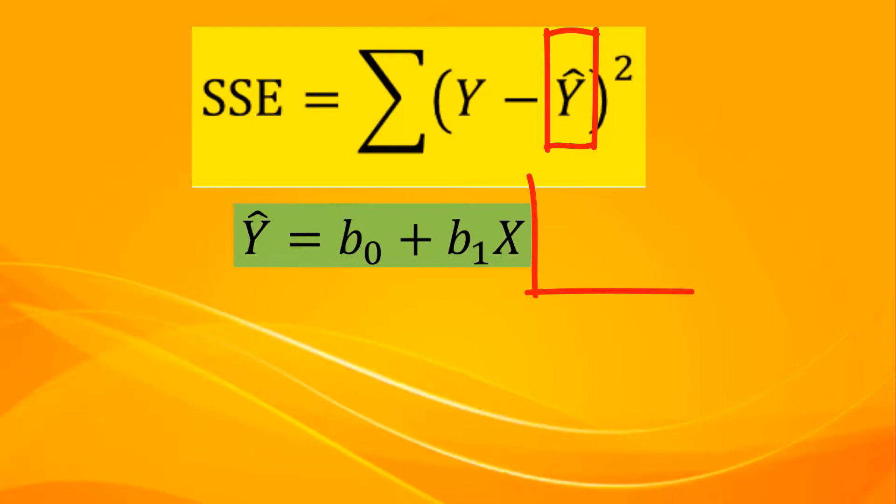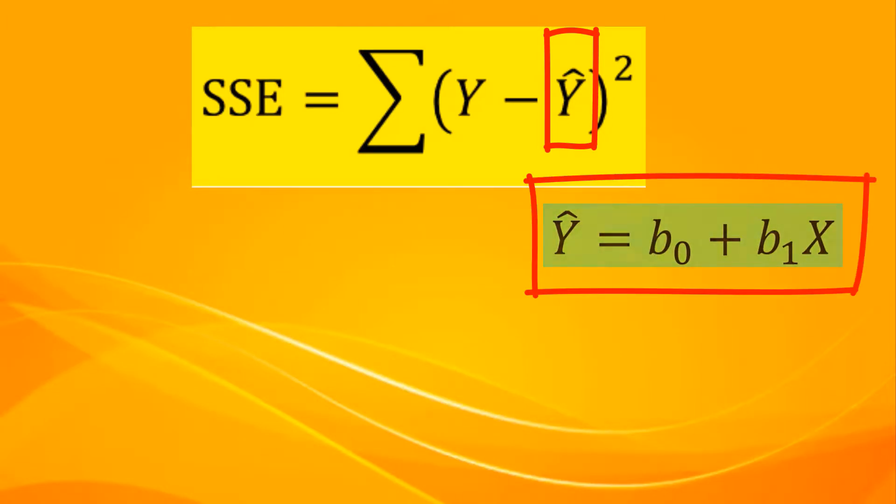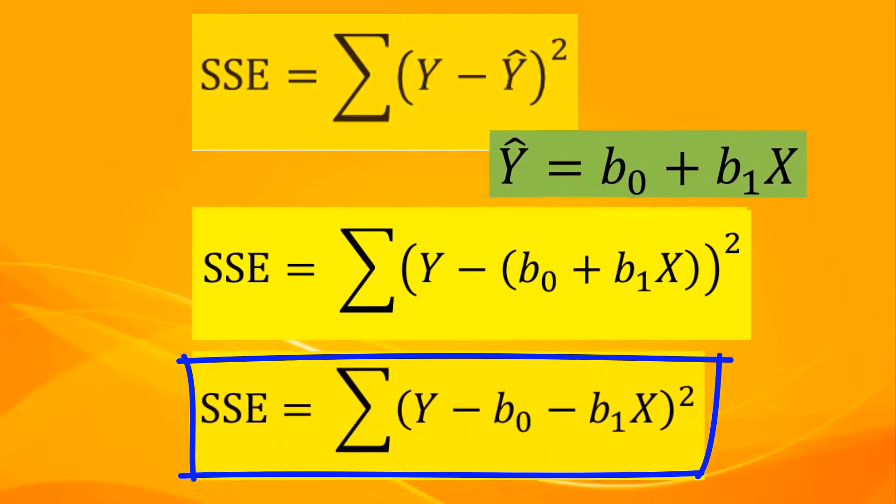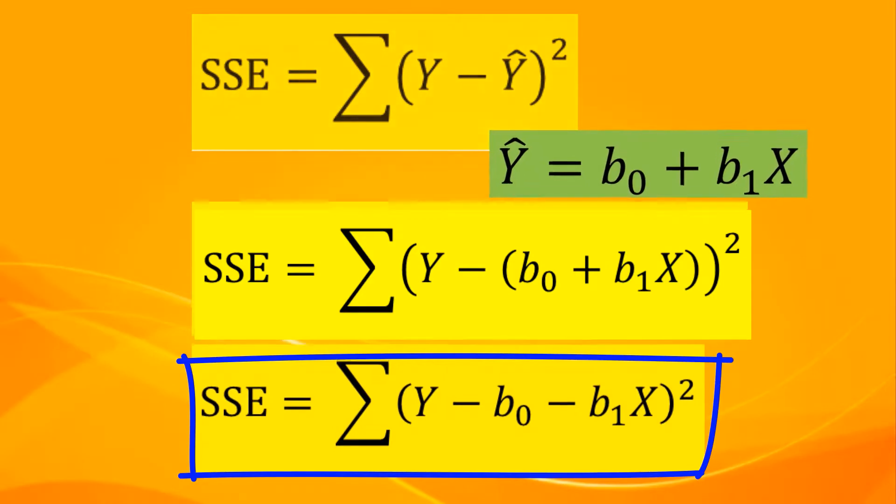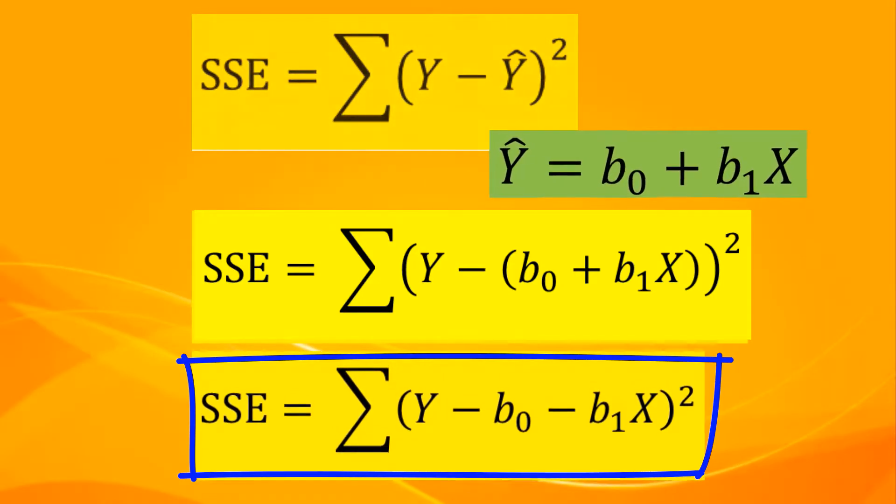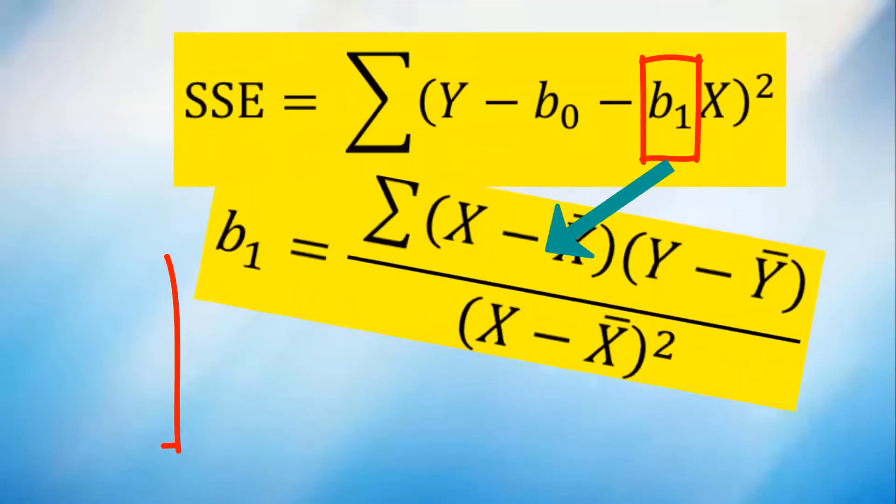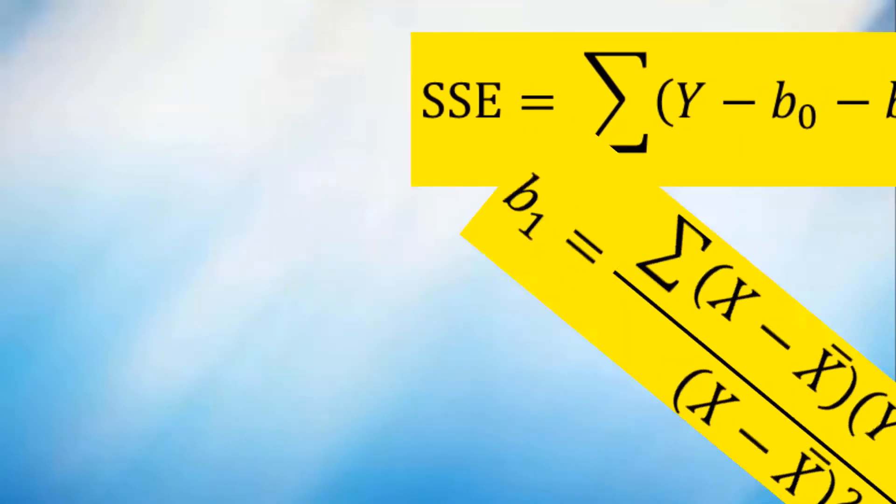As we know, y hat is equal to b0 plus b1 times x. So, the formula for SSE will become sum of actual value of y minus b0 intercept minus b1 slope coefficient times x independent variable, squared. From this formula of SSE, we can arrive with formula in finding the b1 slope coefficient.